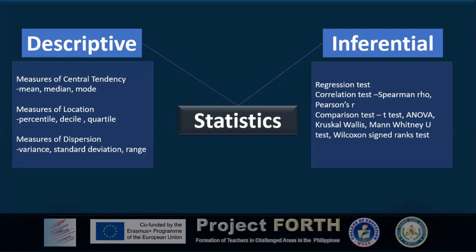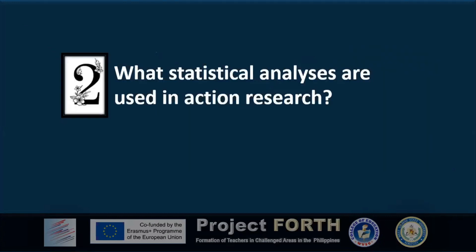For descriptive statistics, you may have encountered tools such as measures of central tendency — mean, median, and mode — measures of location such as percentile, decile, and quartile, and measures of dispersion such as variance, standard deviation, and range. For inferential statistics, we have regression tests, correlation tests such as Spearman's rho and Pearson's r, and comparison tests such as t-tests, ANOVA, Kruskal-Wallis, Mann-Whitney U-test, and sign tests.